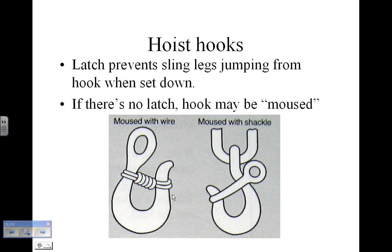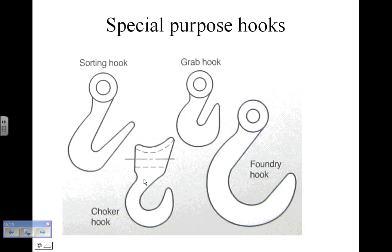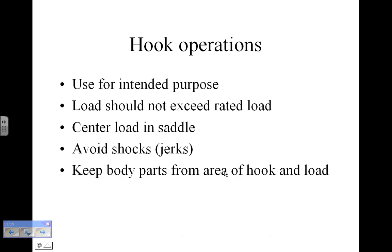Another solution if you don't have a latch — you can mouse it. In this case you've bent a wire around there. And then there are special purpose hooks for different applications. If you just want to grab onto a rope you might have something like this, where the opening is narrower than the bowl down here. A foundry hook would be something you might see carrying big buckets of molten metal or something like that.